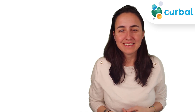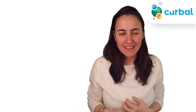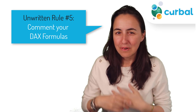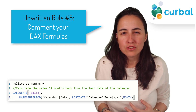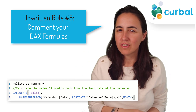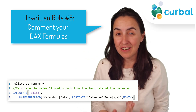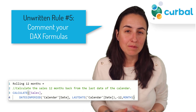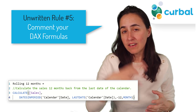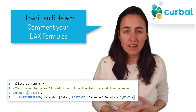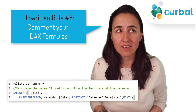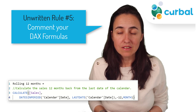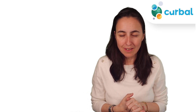Another unwritten rule is to always comment your DAX measures. When you're getting started, you're just plowing through making sure your calculations are correct. But a week, a month, or a year later when you open that model and want to change your measure, it's going to be a lot harder if you haven't commented. You'll probably learn this the hard way, but start commenting your measures now.